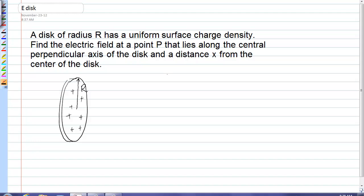Now we have from a previous problem, and you would have to be given this if this was on the exam, that E due to a ring of charge is equal to k q_ring times x over the square root of x squared plus the radius of the ring squared to the three halves.